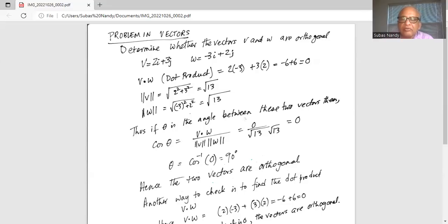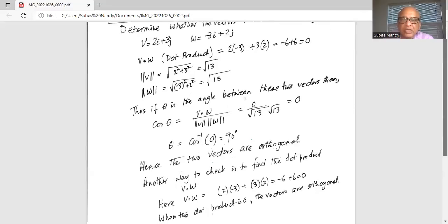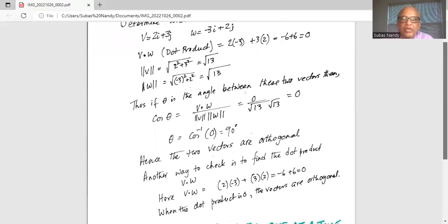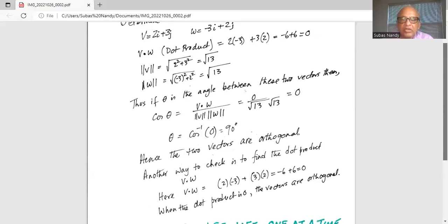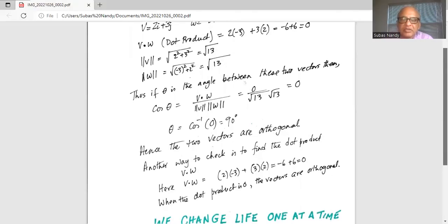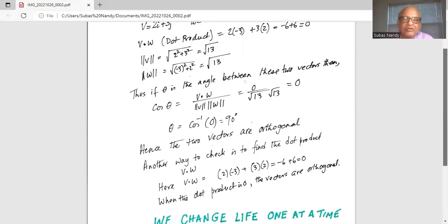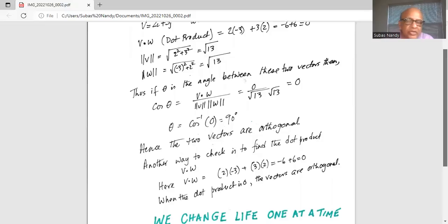Hence the two vectors are orthogonal. Another way to check is to find the dot product of v dot w. Here v dot w, the dot product as we have shown before, is 2 times minus 3 plus 3 times 2, which is minus 6 plus 6, which is 0. When the dot product is 0, the vectors are orthogonal. So that's another way to tell if these two vectors are orthogonal, which we showed yes they are orthogonal.